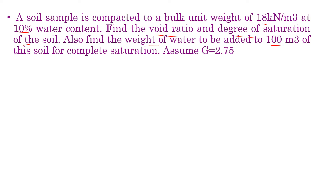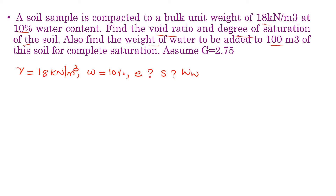The data given: bulk unit weight gamma is equal to 18 kilo Newton per meter cube, water content W is equal to 10%. They ask us to find the void ratio E, the degree of saturation S, and the weight of water to be added to 100 meter cube of the soil sample for complete saturation. Also given: G is equal to 2.75.